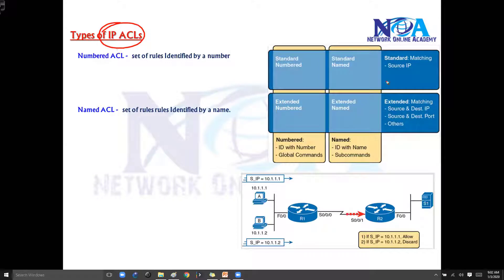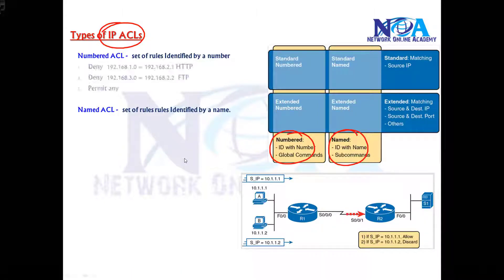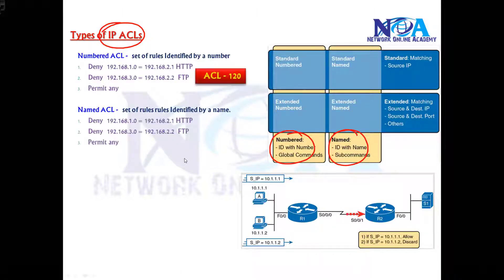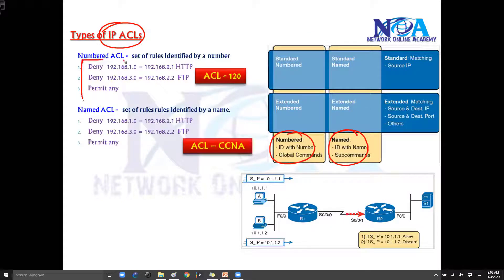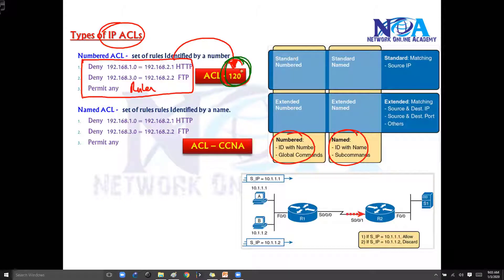We have something called numbered ACLs or named ACLs. These are the rules we define — it can be 2, 3, 10, 20, any number of rules. All these rules can be identified with some number. For example, 120 is the number, and if you are identifying with a number then we call it a numbered ACL.